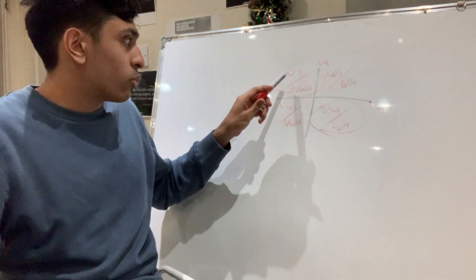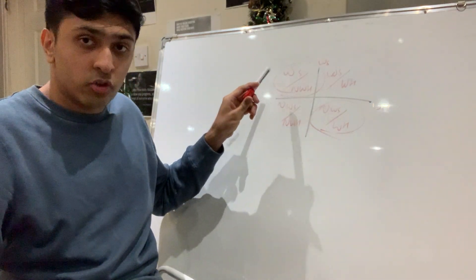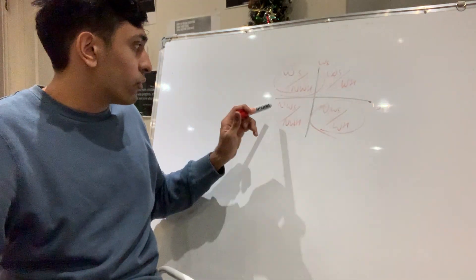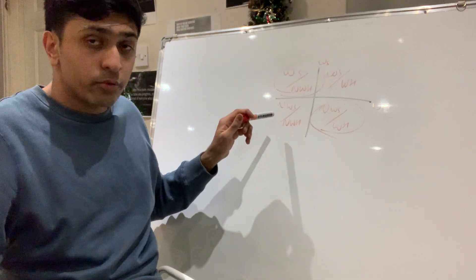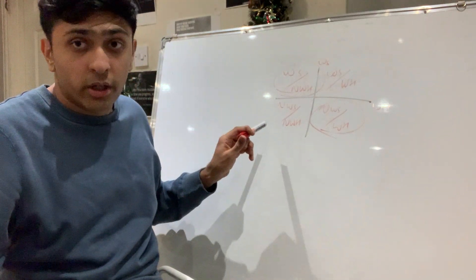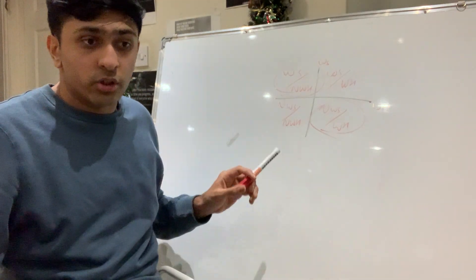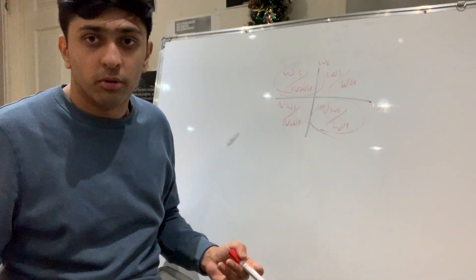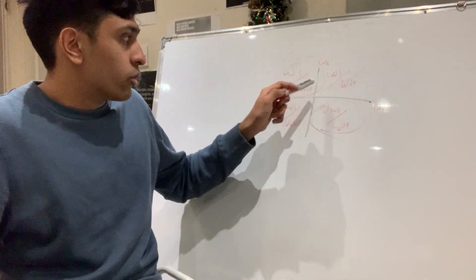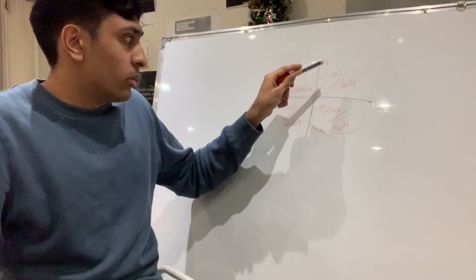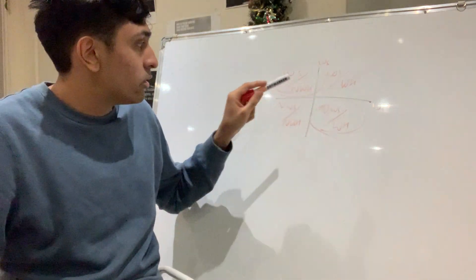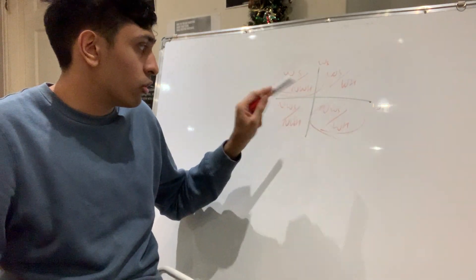On the top left quadrant we've got working smart but not working hard. On the bottom left quadrant we've got not working smart and not working hard, which is its own whole host of problems. On the top right quadrant we've got working smart and working hard, and in the bottom right quadrant we've got not working smart and working hard.